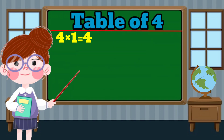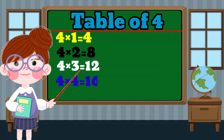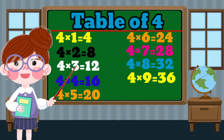4 times 1 equals 4. 4 times 2 equals 8. 4 times 3 equals 12. 4 times 4 equals 16. 4 times 5 equals 20. 4 times 6 equals 24. 4 times 7 equals 28. 4 times 8 equals 32. 4 times 9 equals 36. 4 times 10 equals 40.